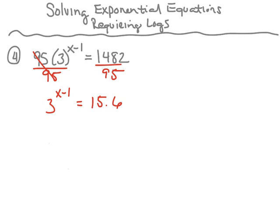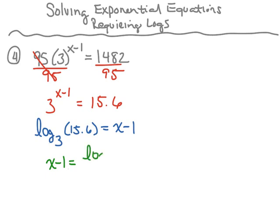Now I've got the base and the exponent isolated, so I'm going to rewrite this as a log. This becomes log base 3 of 0.156 equals the exponent, which is x minus 1. We're going to use our change of base property: x minus 1 equals the log of 0.156 divided by the log of 3. Entering this into my calculator, I end up with approximately 2.5.